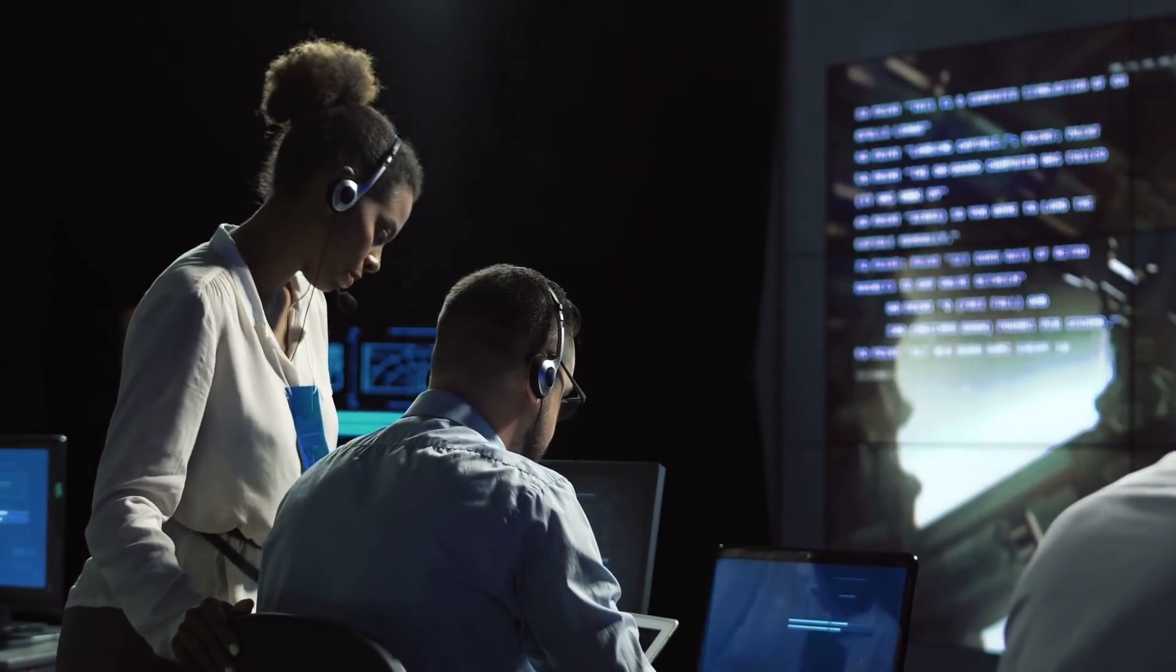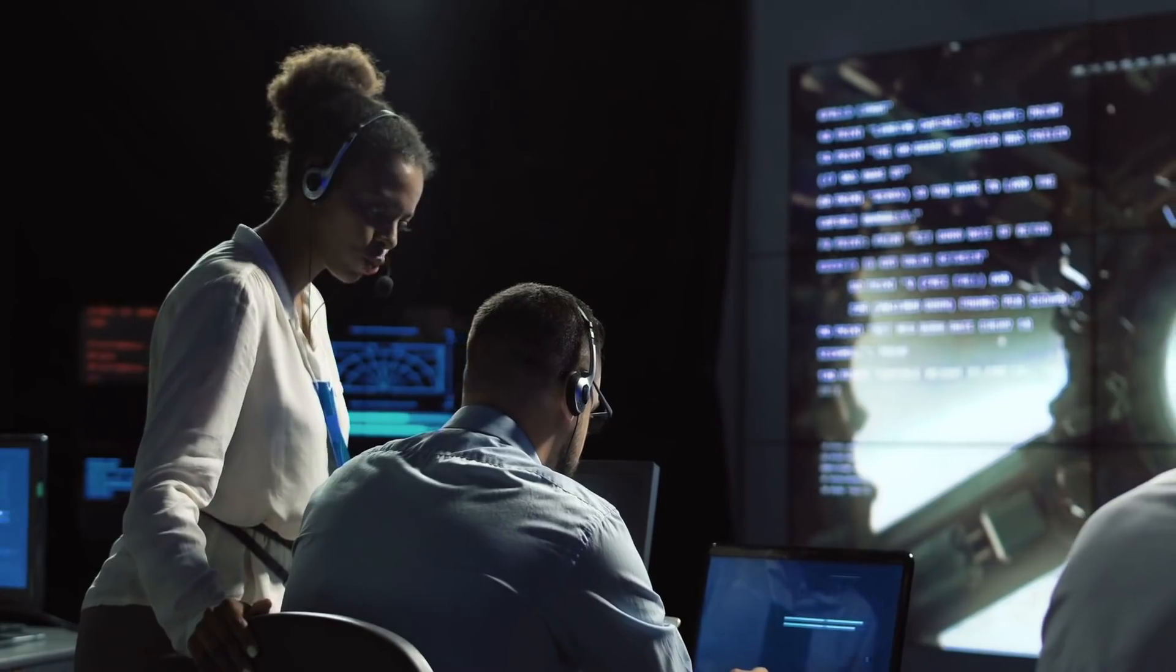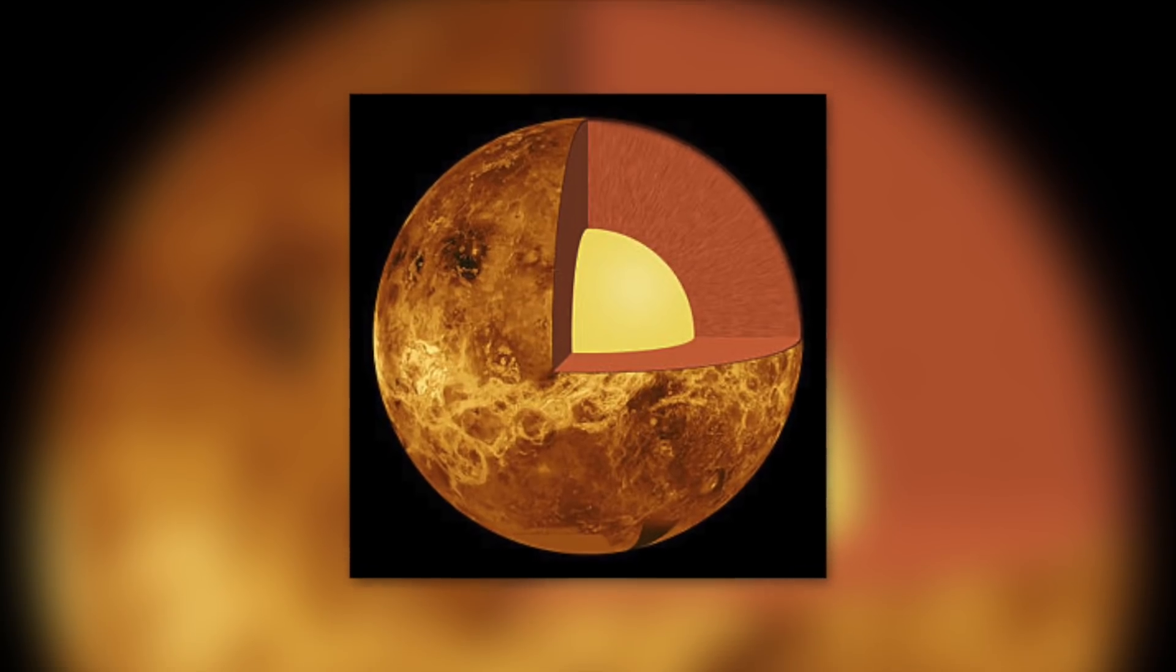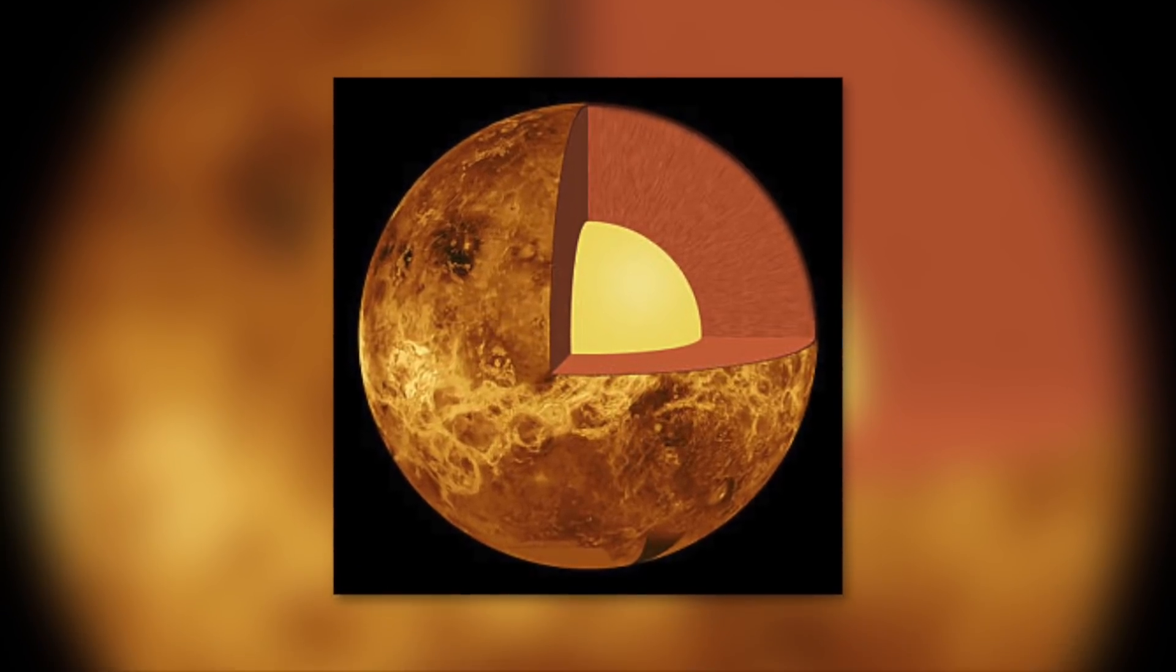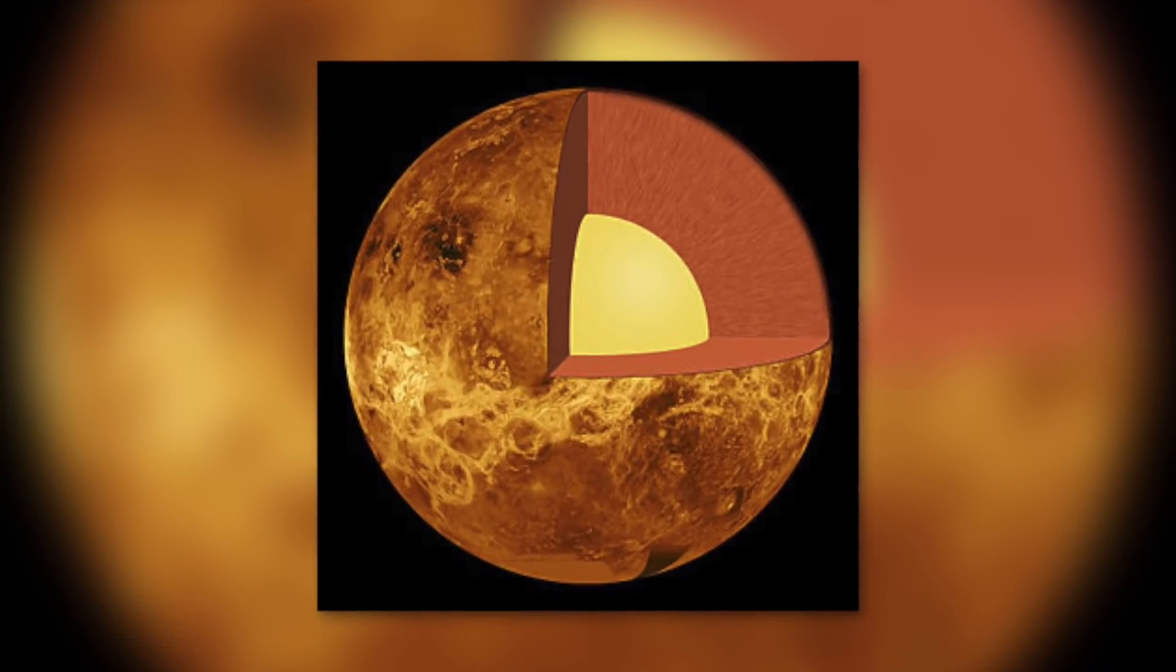Another thing many researchers still disagree about is the core of Venus. Here, we're still not sure whether the core is now partly still liquid or completely hardened.